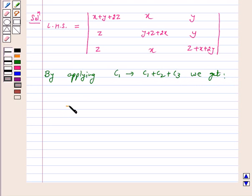Our left hand side equals c1 plus c2 plus c3, that is 2x plus 2y plus 2z, again x plus y plus z plus 2x which is 2x plus 2y plus 2z, again z plus x plus z plus x plus 2y is also 2x plus 2y plus 2z. Now c2 and c3 are same.